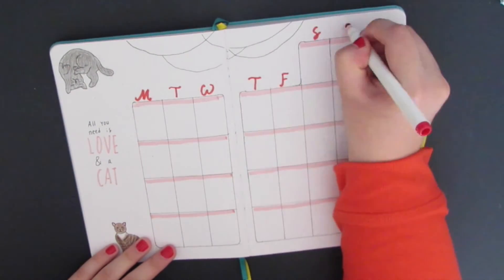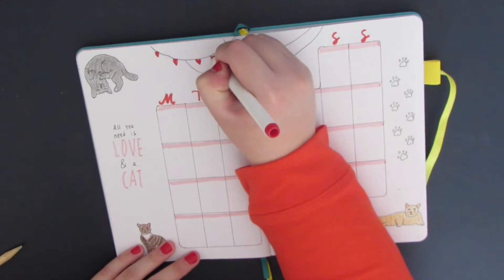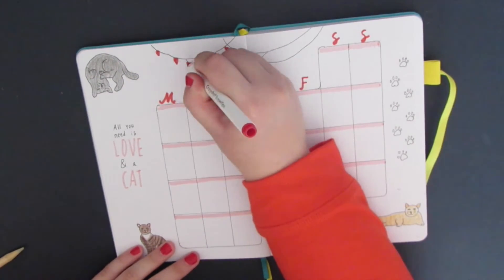I write out the days of the week in a red marker. Then I draw some red and pink cards along those curvy lines at the top to look like someone's hung up a string of hearts.